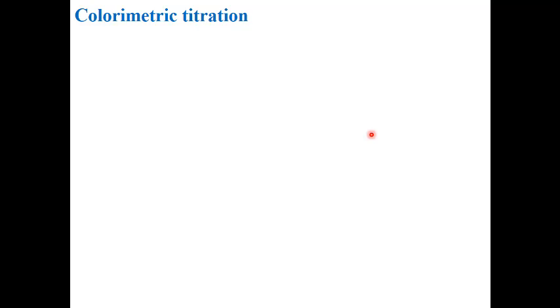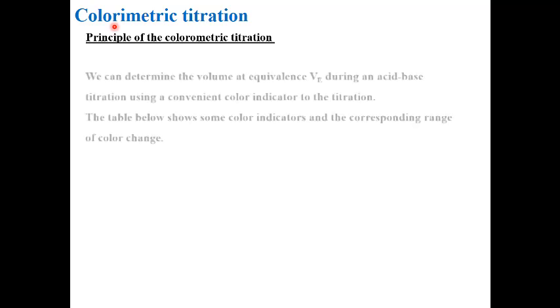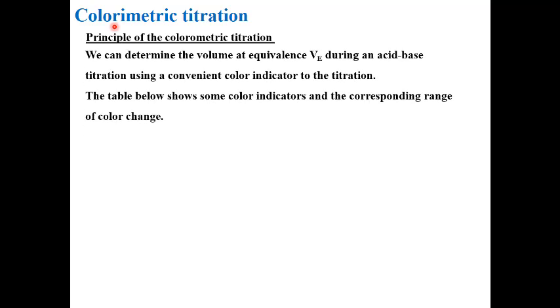Now, what about colorimetric titration? When we say colorimetric, we remember the color indicator. The principle is: we are titrating an acid by a base or vice versa, but the equivalence point is detected by the change in color, not by the pH meter. We can determine the volume at equivalence VE using a convenient color indicator.